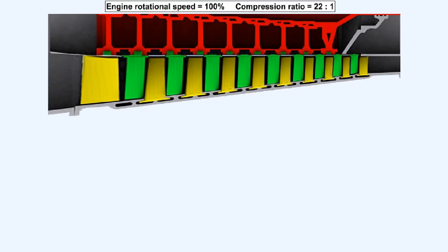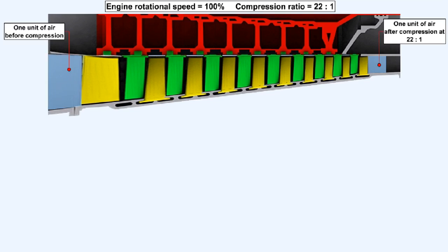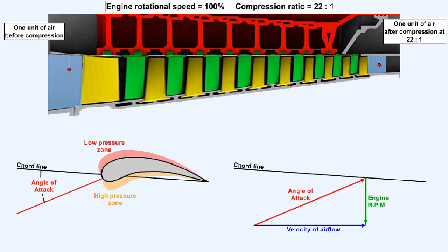If the compression ratio of this particular compressor is designed to be 22 to 1 at 100% engine RPM, then this diagram depicts the volume of a unit of air under normal compression reducing as it passes through the compressor at 100% power. The vectorial relationship between the engine RPM and the airflow axial velocity will give this angle of attack over the rotor blade and these pressure zones, which are the optimum that would occur at the design point.